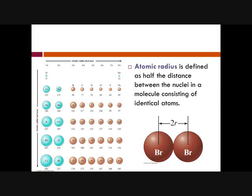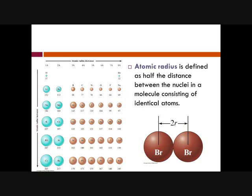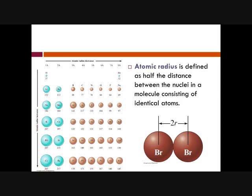The next trend is atomic radius. The definition of atomic radius is half the distance between the nuclei in a molecule consisting of identical atoms. Going from left to right across a period, atomic radius gets smaller; going from top to bottom down a group, atomic radius gets larger.